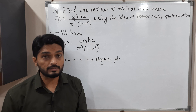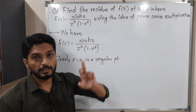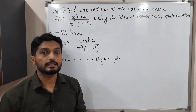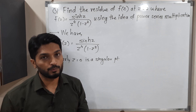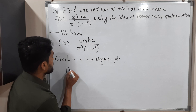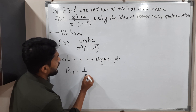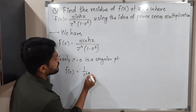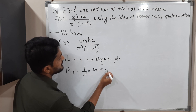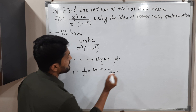The next task is to use the concept of power series multiplication and find the Laurent series expansion, which will give us the residue. So I am expressing f(z) as 1 over z⁴ times hyperbolic sine z times 1 over (1 minus z²).